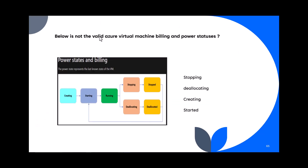Question 65: Which of the following is NOT a valid Azure virtual machine billing and power status? A virtual machine can have statuses: creating, starting, running, stopping, stopped, deallocating, and deallocated. The question asks what is NOT valid. 'Started' is not one of these statuses — the correct term is 'running.' So the answer is 'started.'